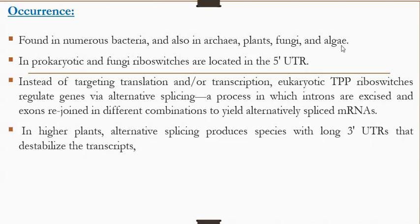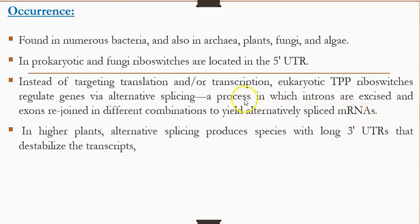Coming to their location within the mRNA: in prokaryotes and fungi, riboswitches are mostly present at the 5' untranslated region. In eukaryotes, riboswitches do not regulate transcription or translation; instead, they are involved in alternate splicing, which leads to the production of different types of final mRNA transcripts from the pre-mRNA transcript. This results in more mRNA varieties from a single pre-mRNA, leading to different types of proteins being synthesized. Essentially, the pre-mRNA transcript is the same, but through alternate splicing, many different mature mRNAs and different polypeptides are produced.